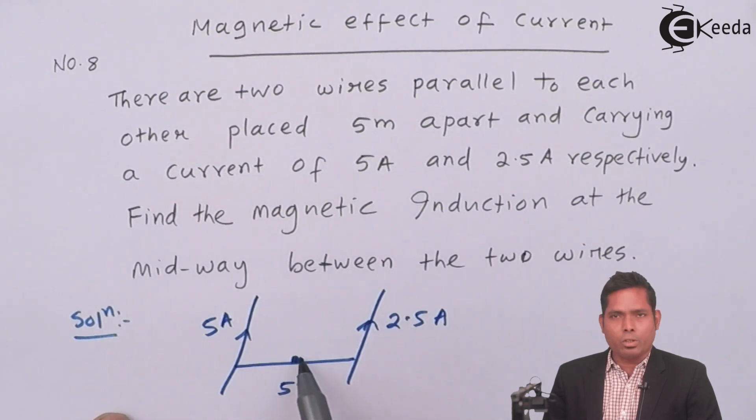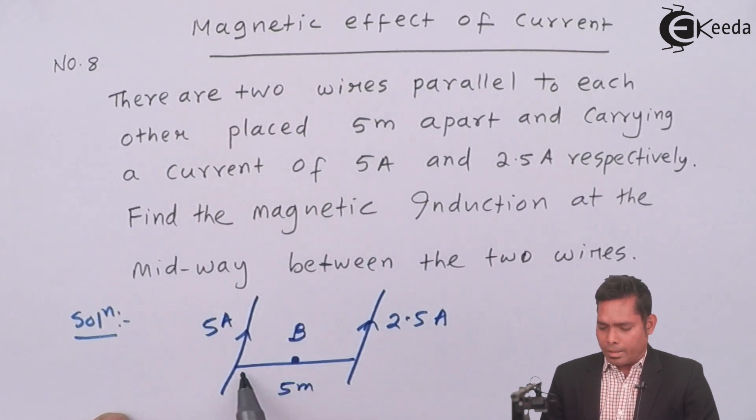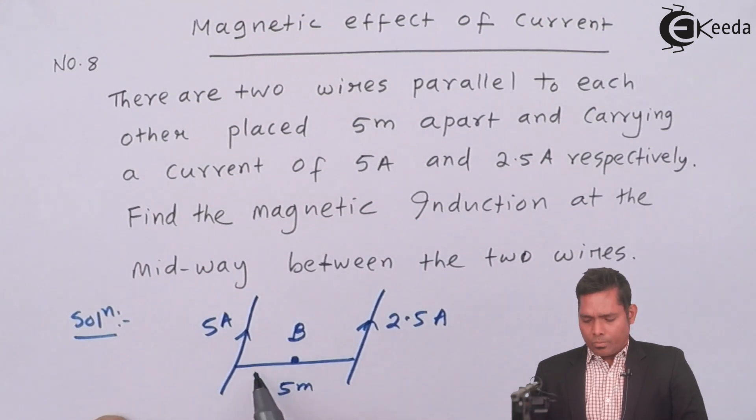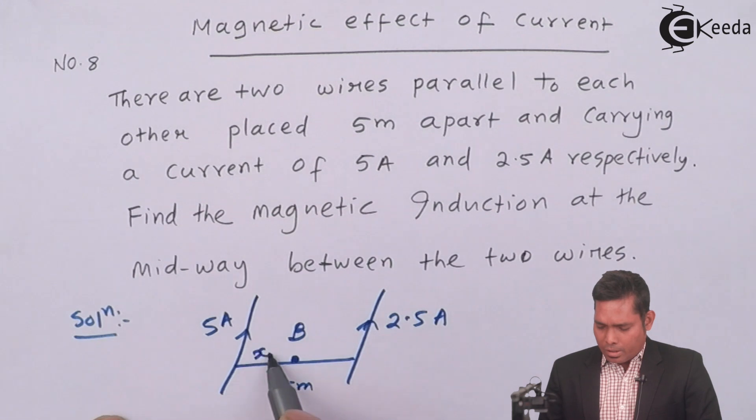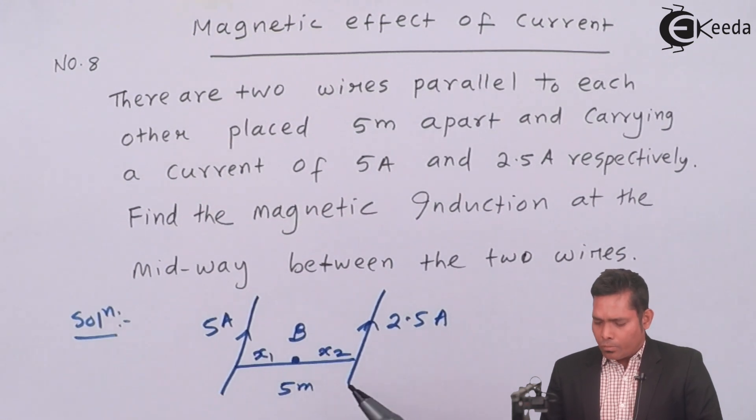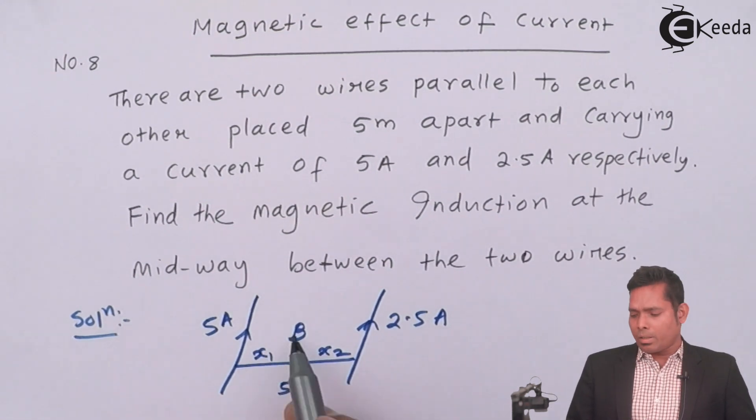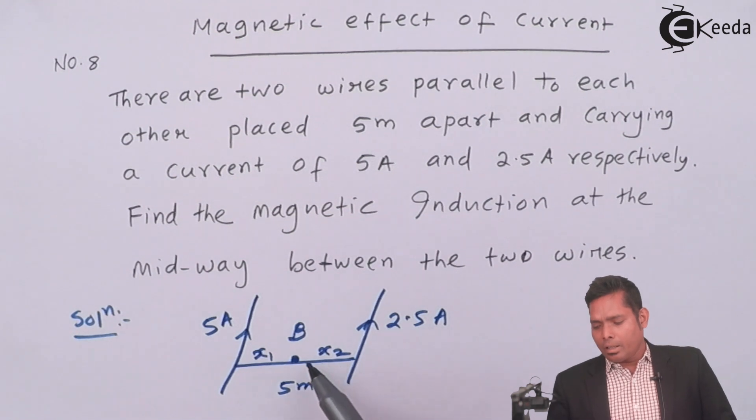This is the point where you have to find the B, the magnetic induction. This distance and this distance is exactly half. This distance, suppose x1, this distance is x2. This point is at the distance of x1 from this wire and at the distance of x2 from this conductor.